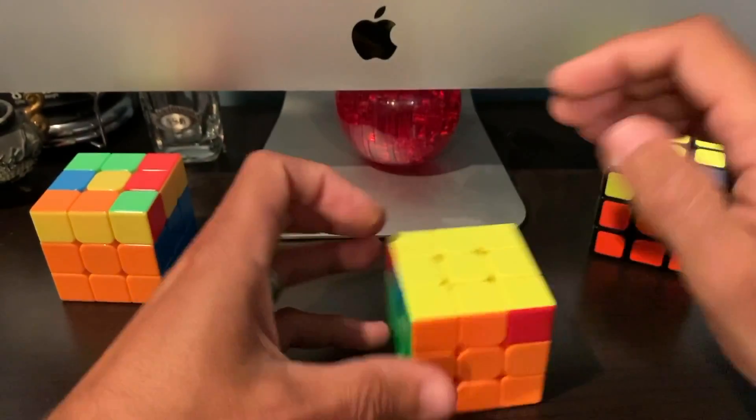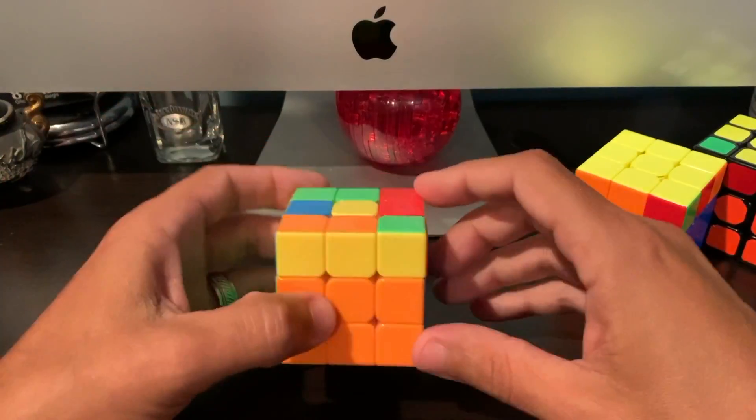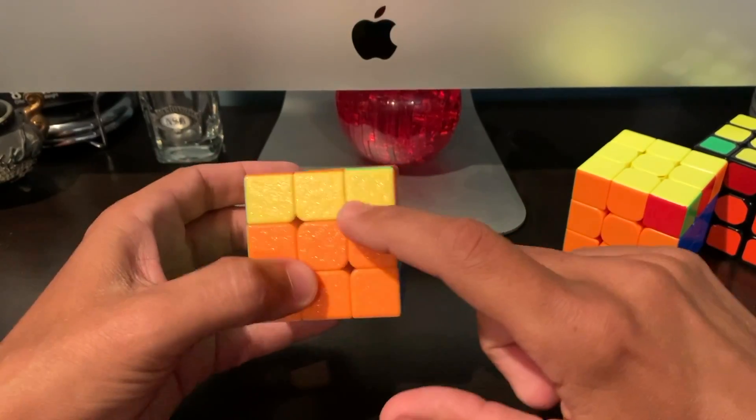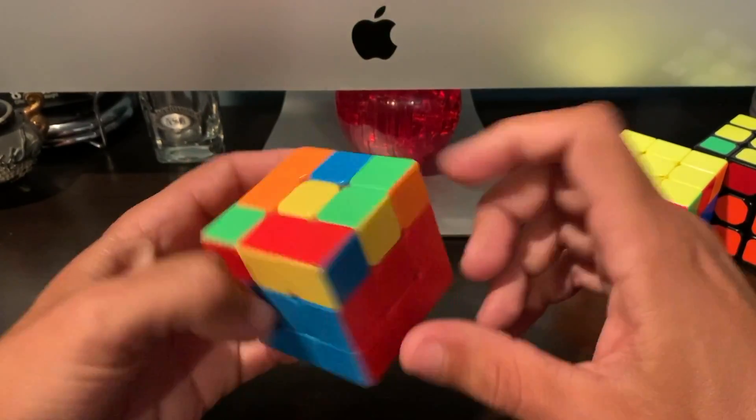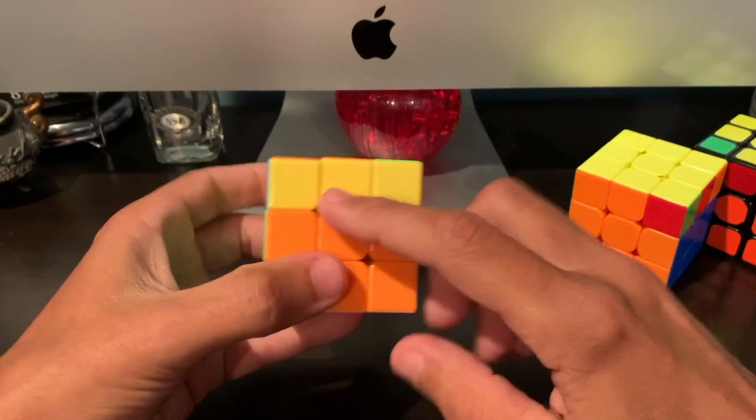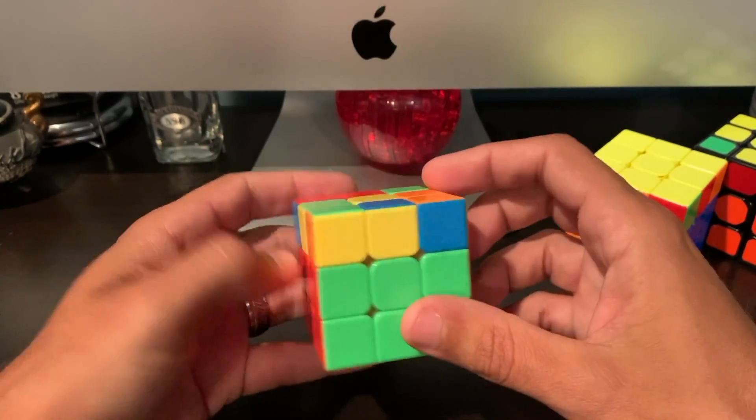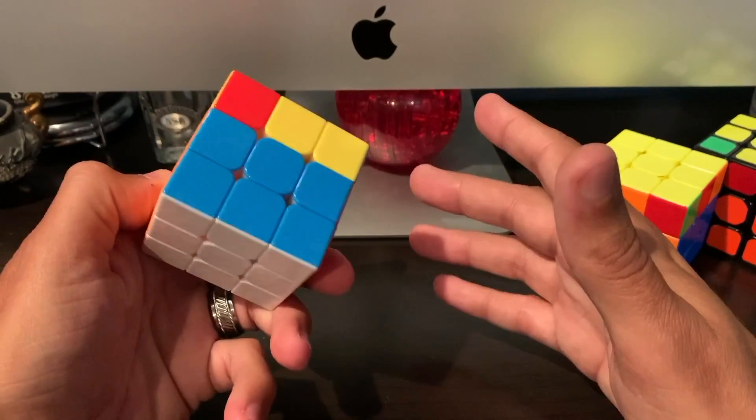What you don't want to do is have the three bars with the two and the two. You don't want the three facing you or facing away from you, because you can do the same exact algorithm but it's not going to complete your top solve.